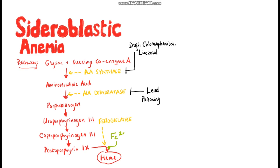Drugs like chloramphenicol, linezolid, and isoniazid also affect ALA synthase, with isoniazid specifically inhibiting vitamin B6, which is a necessary cofactor in the formation of aminolevulinic acid. The cause may also be genetic, such as X-linked sideroblastic anemia. It's important to remember that sideroblastic anemia is highly linked to myelodysplastic syndromes. Overall, iron can't bind to protoporphyrin 9 to form heme either because protoporphyrin isn't being produced properly or because ferrochelatase isn't working, resulting in an accumulation of iron in the mitochondria. These iron-filled mitochondria surround the nucleus of the erythroblast, forming a ringed sideroblast.